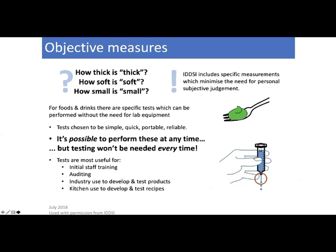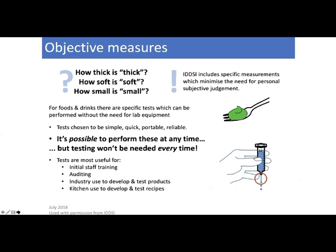These tests are most useful for initial staff training, auditing, enabling industry to develop and test their products, and for kitchen use to develop and test recipes. They're also critical for carers of people with disability going into the community — using items from restaurants or cafeterias — to check whether food is appropriate. You'll need a fork, spoon, or 10 ml syringe. All testing can be done in 10 seconds or less.